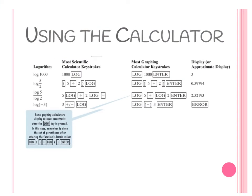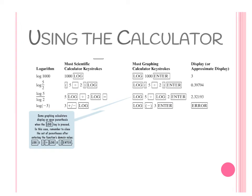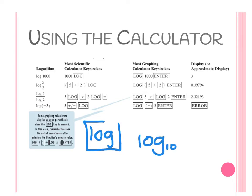Now we're going to use the calculator. Not all logs can be solved by using the one-to-one property — you sometimes need your calculator. On the calculator, your log button — which is directly above the LN button we were using for section 1 — that log is the same thing as log base 10. So if you see log base 10, you can use the calculator. If you see just log, it is the same thing. But this is not the same as log base 2, so make sure you're using either log base 10 or log.